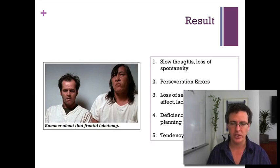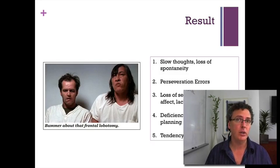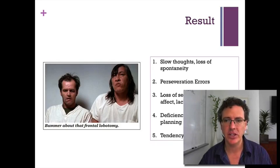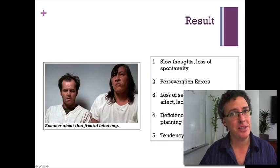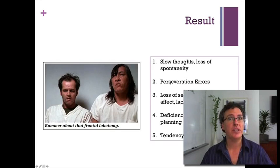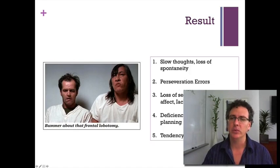If it's you or I, and we suddenly start sorting the way that used to work but we're now being told that's the wrong pile, we'd sit back and realize something has changed and try something different. A frontal patient will continue to sort in the way that used to work — they cannot shift their strategy. That's called perseveration: persevering in the face of continual failure. The frontal lobe allows us to escape habitual behavior when it's not working.